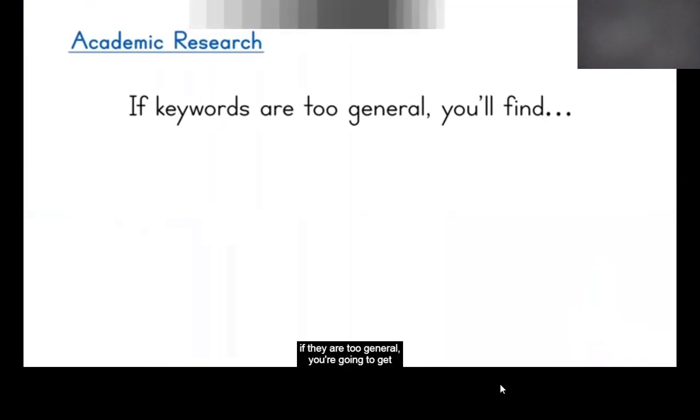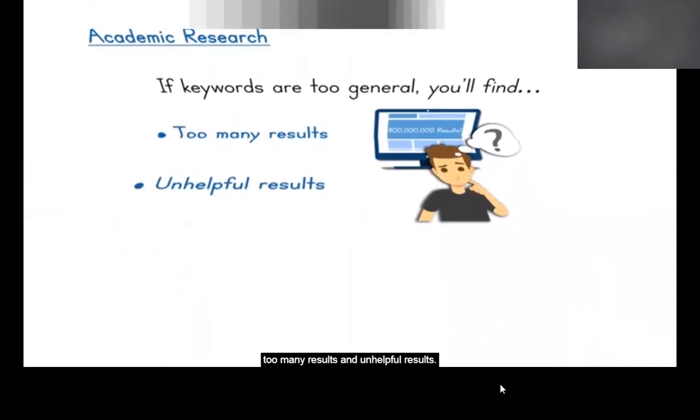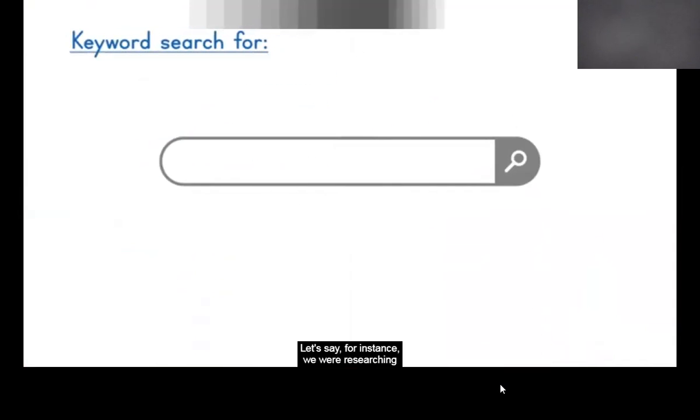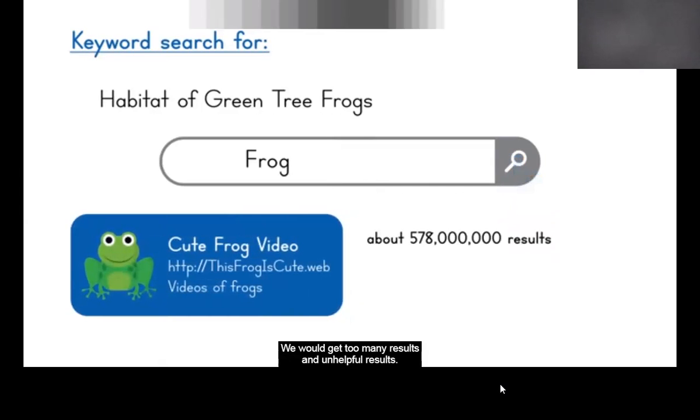When you're choosing your keywords, if they are too general, you're going to get too many results and unhelpful results. Let's say, for instance, we were researching the habitat of green tree frogs. In the search engine, we only used a general word like frog. We would get too many results and unhelpful results.